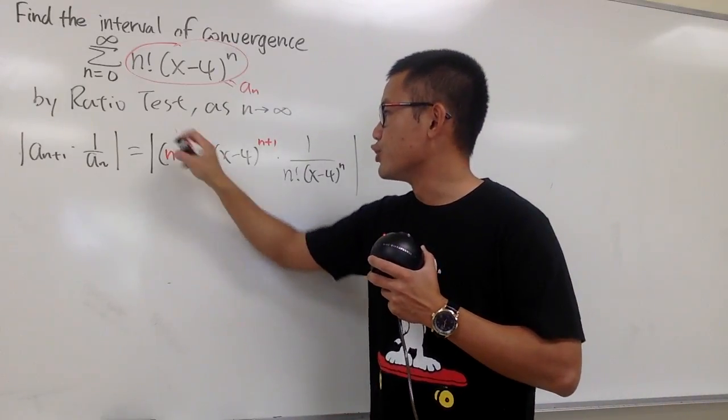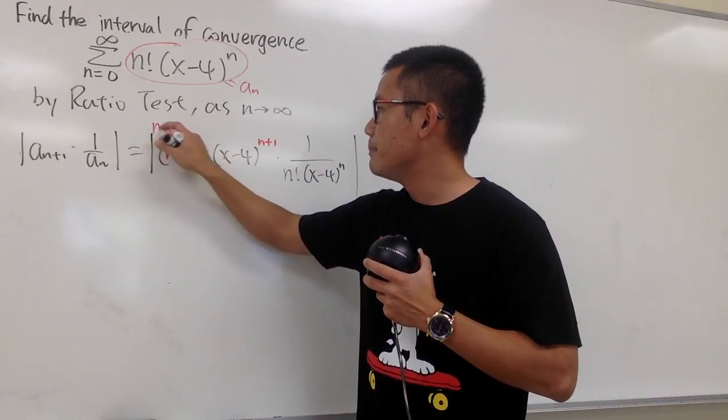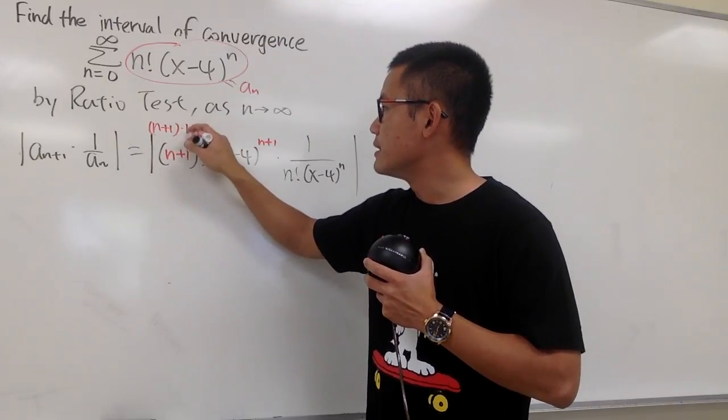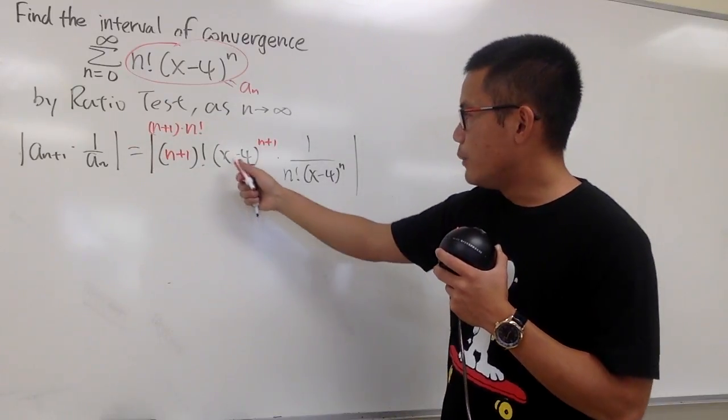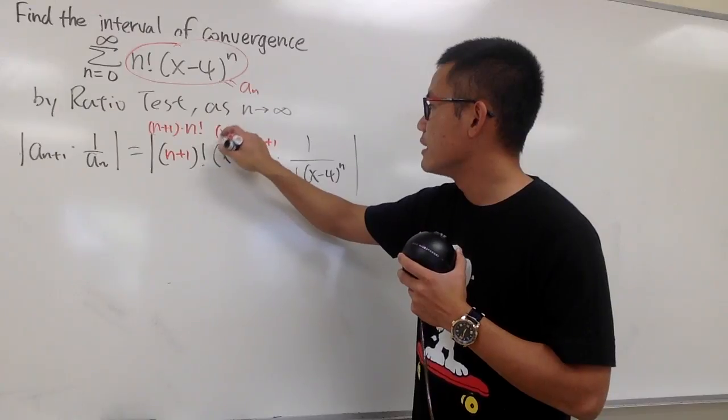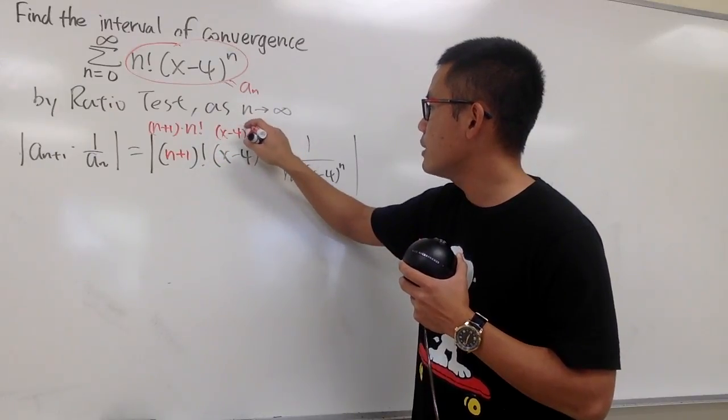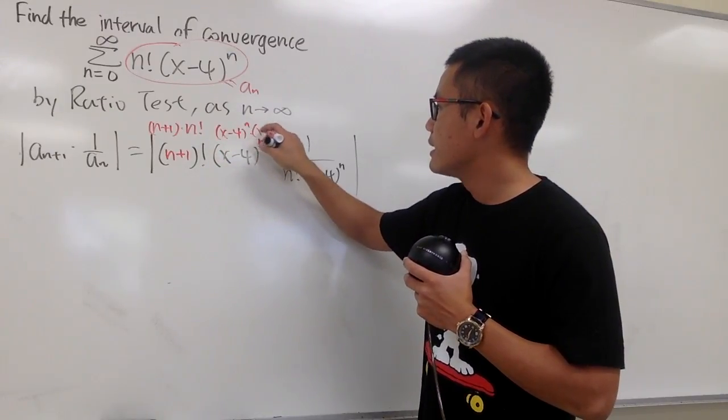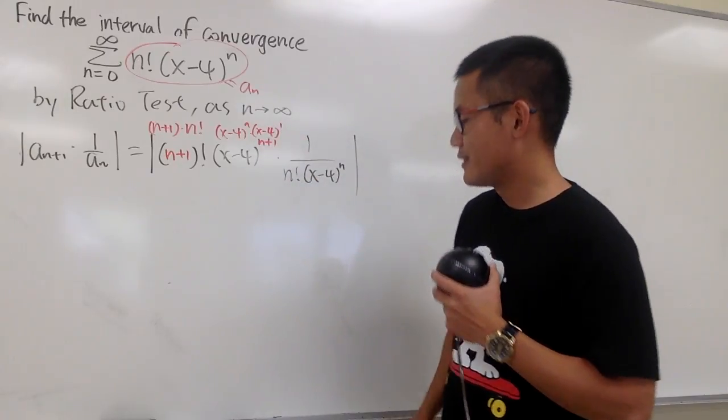Now let's simplify this a little bit. We can rewrite this as (n+1) times n factorial. And we can also rewrite this as (x-4) to the nth power times (x-4) to the first power.